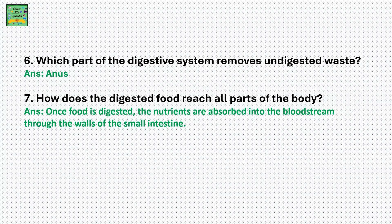Which part of the digestive system removes the undigested waste? It's the anus. How does the digested food reach all parts of the body? Once the food is digested, the nutrients are absorbed into the bloodstream through the walls of the small intestine.